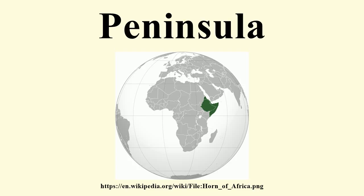Maryland shares the Delmarva Peninsula east of Chesapeake Bay with Delaware and Virginia. St. Mary's Peninsula is defined by the Patuxent River, the Potomac River, and Chesapeake Bay. Calvert Peninsula lies between Chesapeake Bay and the Patuxent River. Named examples include the Broadneck Peninsula in Anne Arundel County and the Elk Neck Peninsula in Cecil County.